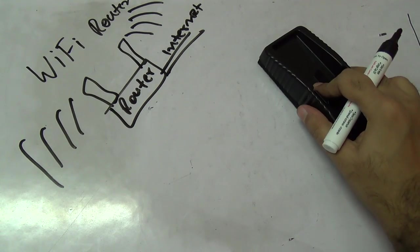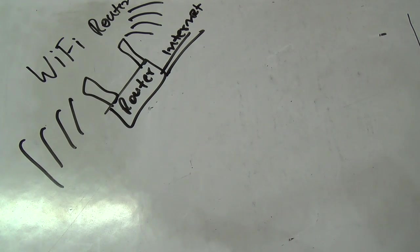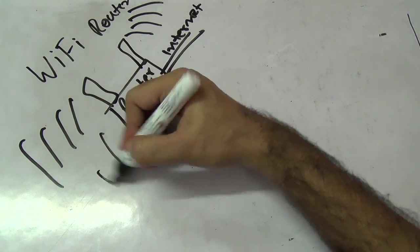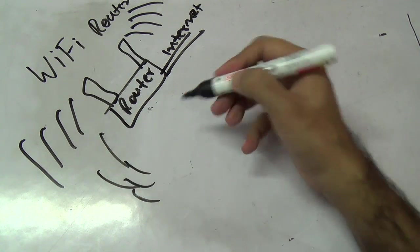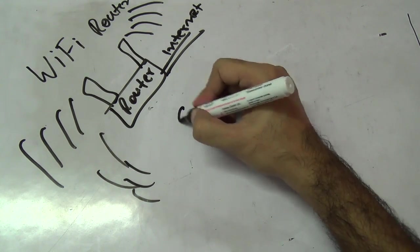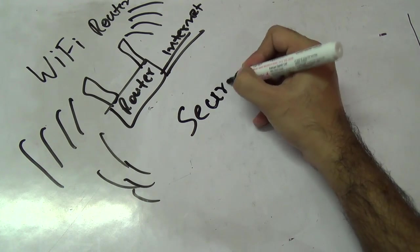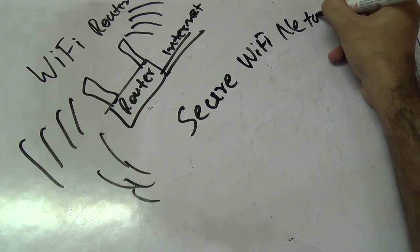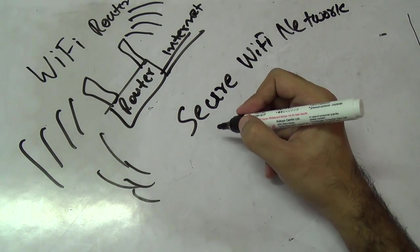In the next part of this video, I'll be talking about some other advanced things you need to do with your Wi-Fi routers. For example, as you have seen, this is just a radio wave, so anybody can tap into this and use your internet connection. To prevent that, you have to secure your Wi-Fi network.